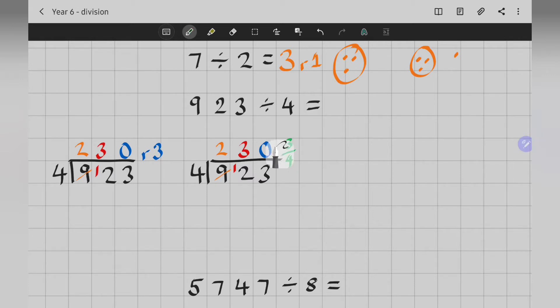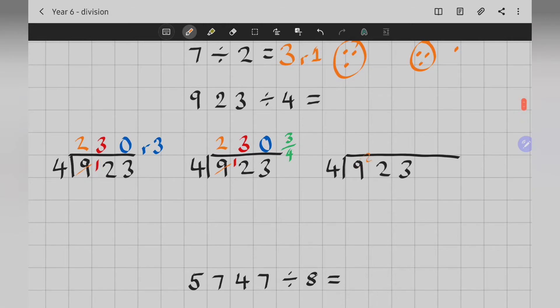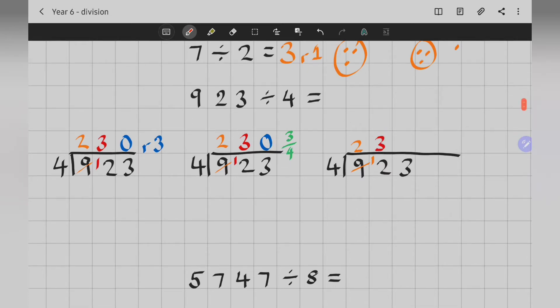So, I've done it as a remainder, as a fraction, but I could also do it as a decimal. I've drawn my bus stop a bit bigger. You'll see why in a second. So, 4 into 9 goes twice, with 1 left over.